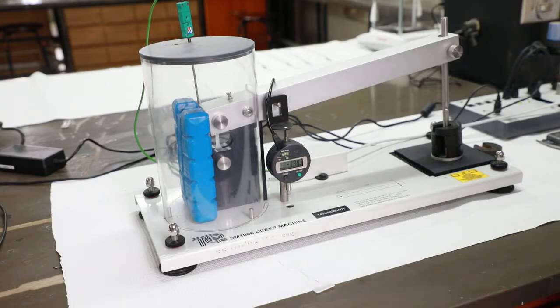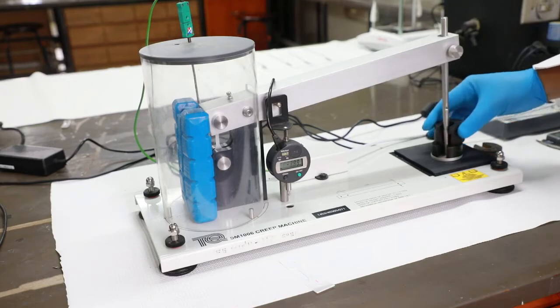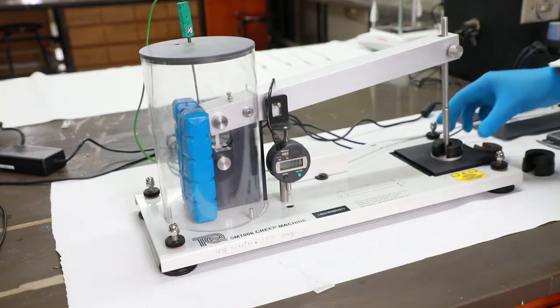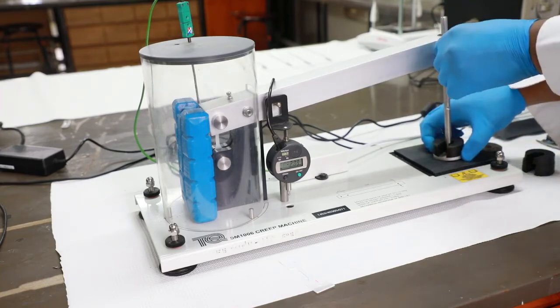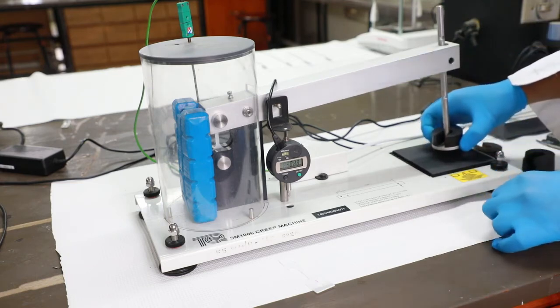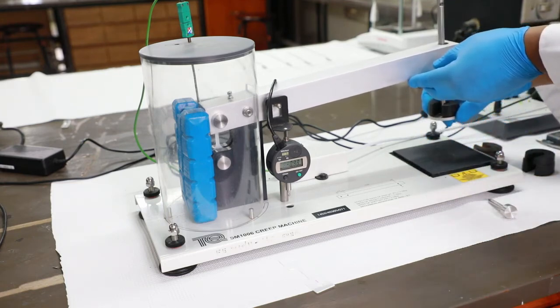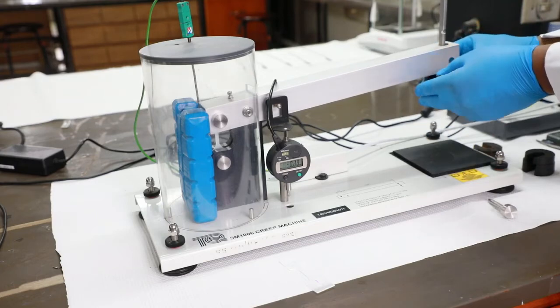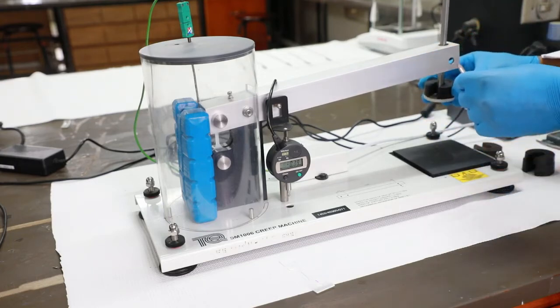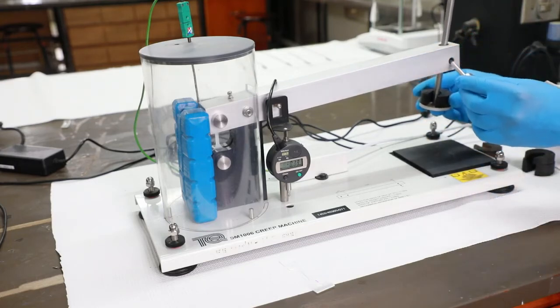Then add a 0.6 kilogram weight to the loading tray while holding the lever arm. Secure the pen.